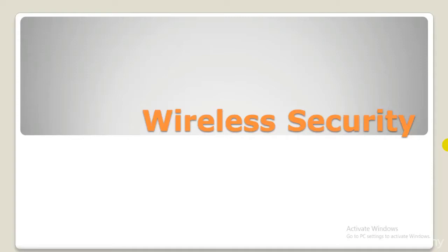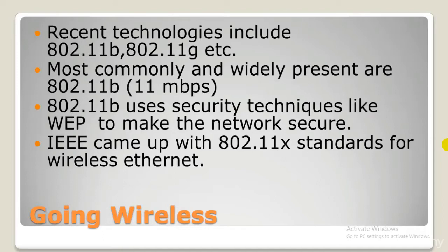Starting with first, there are different types of securities. Recent technologies have 802.11b and 802.11g. Most commonly used is 802.11b, that's up to 11 Mbps. 802.11b uses security techniques like WEP to make the network secure, but WEP is not that secure. As per my experience, and not only my experience, even if you go ahead and check on the internet, it's very easy to crack the WEP encryption. Finally, we have the IEEE 802.11x standards for wireless Ethernet.